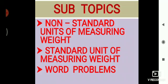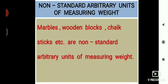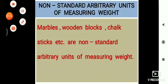Children, first of all you should know what is mass. Mass is the amount of matter or substance that makes up an object. It is commonly measured by how much something weighs. Non-standard units of measurement are those units which are not typically used for measurement. Marbles, wooden blocks, chalk sticks, etc. are non-standard arbitrary units of measuring weight.